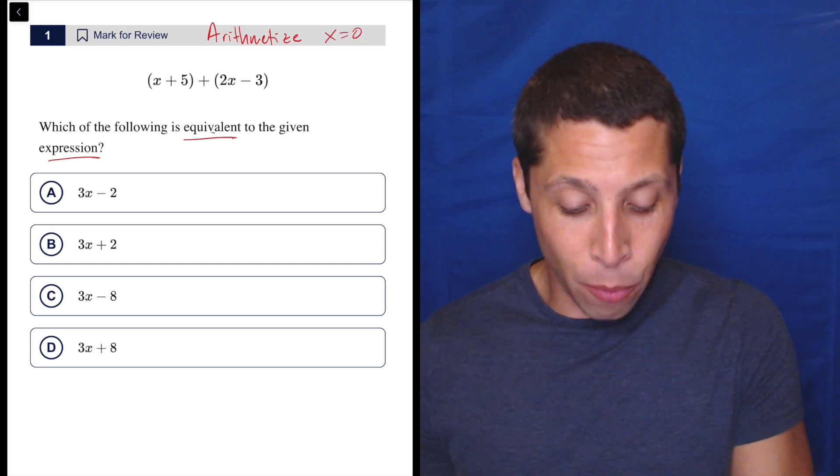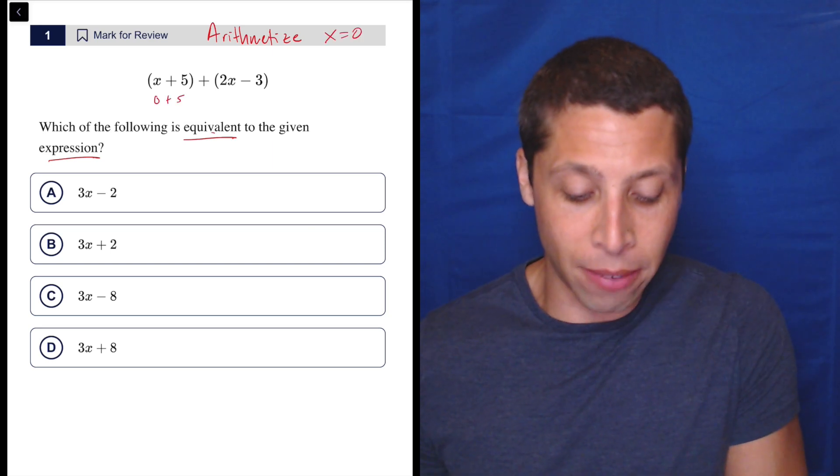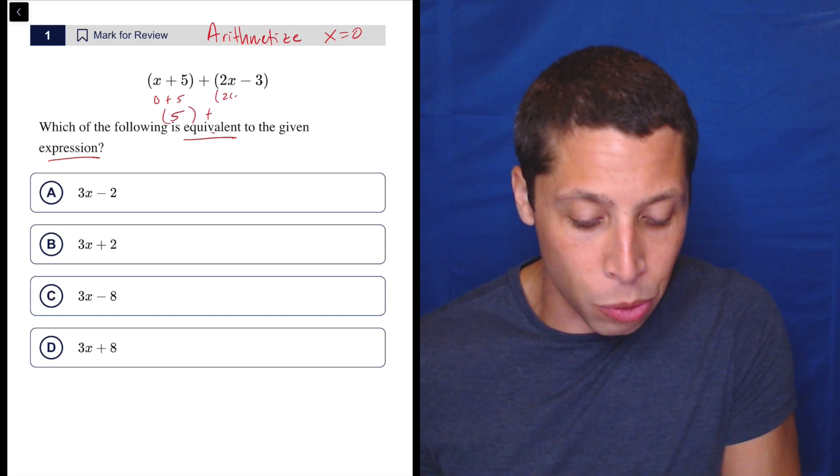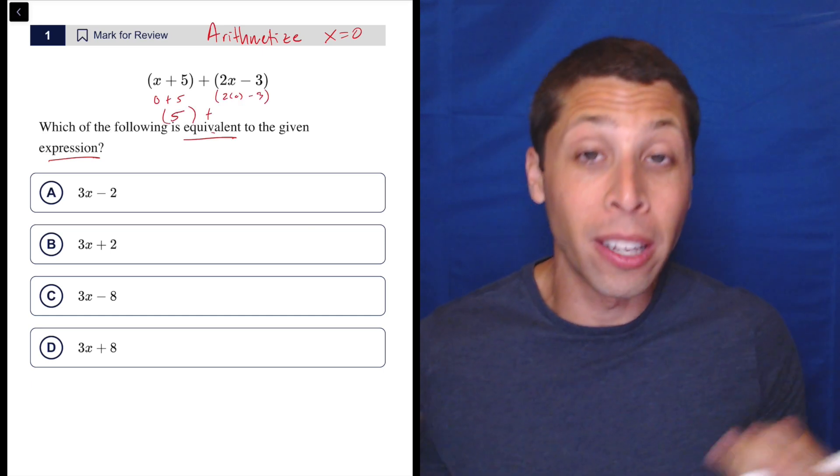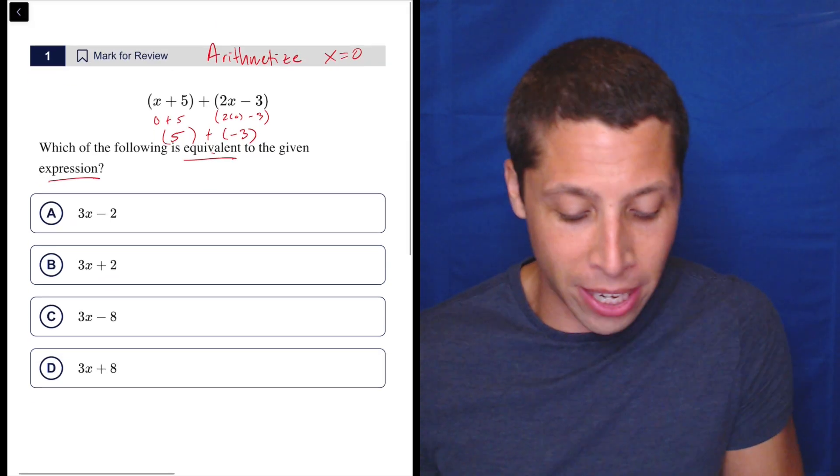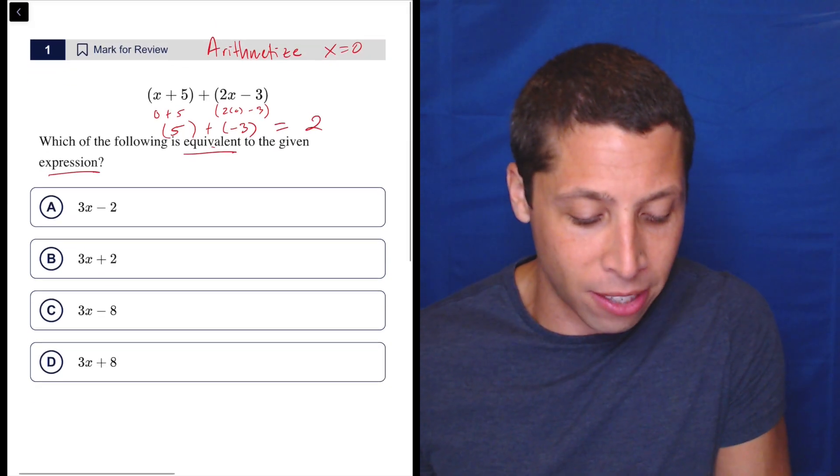What happens? Well, then this becomes, instead of 0 plus 5, just 5, right? And this becomes 2 times 0 minus 3. Well, anything times 0 is 0, and 0 minus 3 is negative 3. So 5 minus 3 is 2.